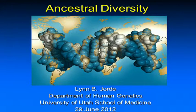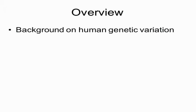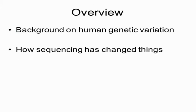I was asked to address the topic of ancestral diversity, so this will be a little bit of a change of pace from the last couple of talks. What I'll be addressing this afternoon is first a little bit of background on human genetic variation — essentially how we've been thinking about human genetic variation over the last several decades — and what the general patterns look like, and then we'll talk about how sequencing, just in the last couple of years, has changed some of these views, and how that pertains to some of the questions we've been discussing over the last day.